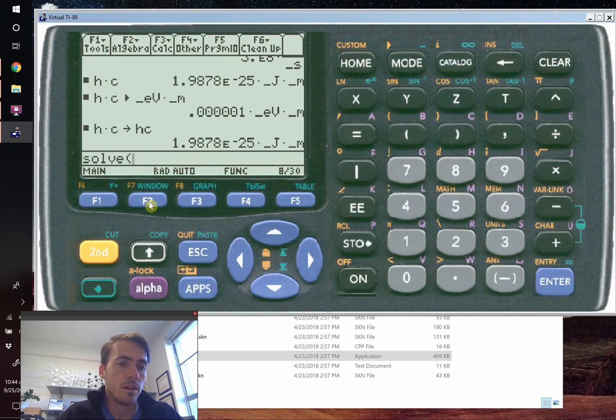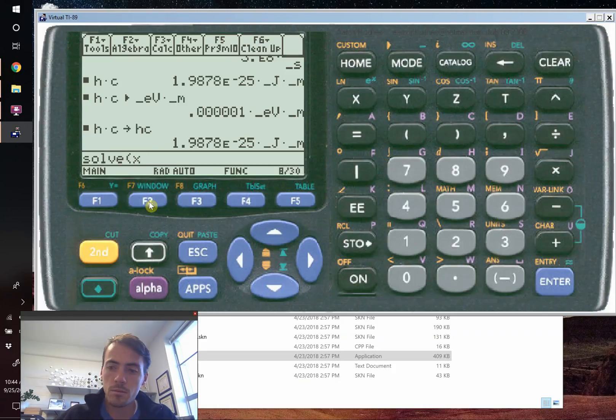And you go ahead and type in your three equations. The ones that we're going to do are the following: it's going to be X plus Y minus Z equals 4.